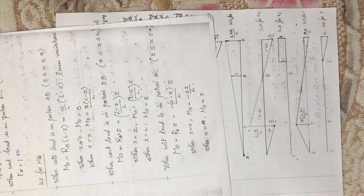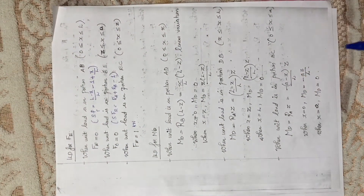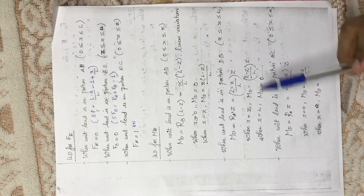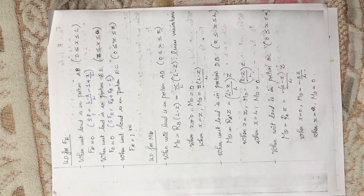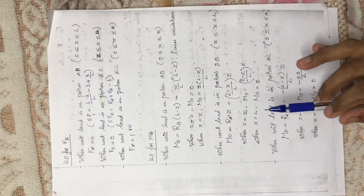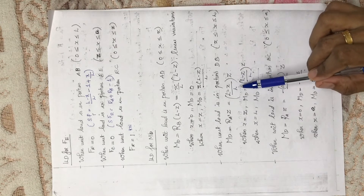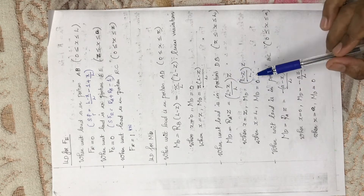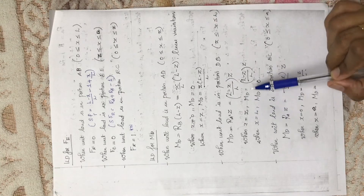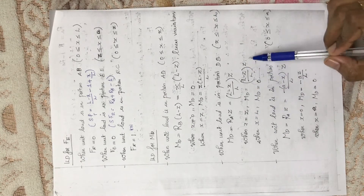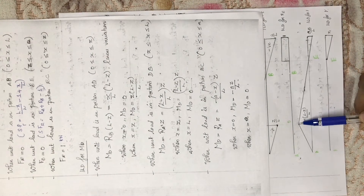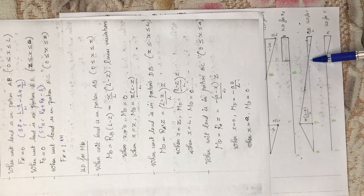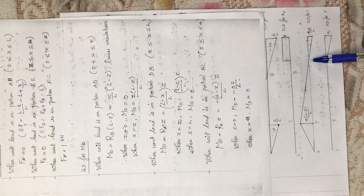Now consider the unit load in the portion DB — Md equals Ra into z, which gives (l minus h)/l into z. Applying the limits: when s equals z, Md equals (l minus z)/l into z — the same value as before, giving the starting point of this segment. When s equals l, Md equals zero.